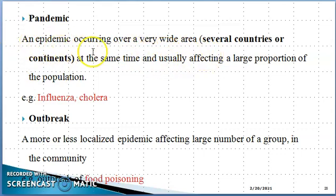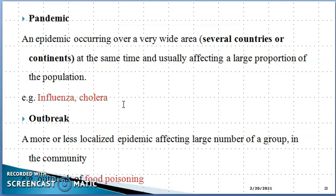Pandemic means an epidemic occurring over a very wide area — several countries or several continents — at the same time, and usually affecting a large proportion of the population. Pandemic means any disease that has involved a large area — the whole country, the whole continent, or the whole world. Currently, COVID-19 is a pandemic because it has involved almost all countries of the world. That is why we say pandemic.